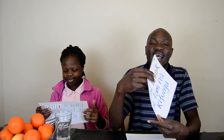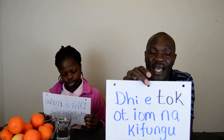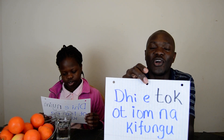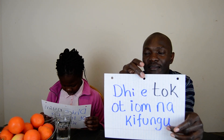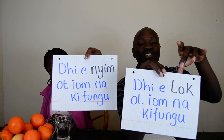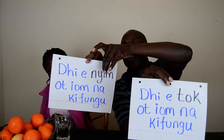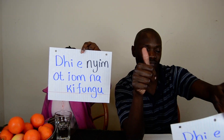Dhi ee tok ot, iomna kifungu. Go to the back of the house and bring me the key. Nikki: Dhi ee nyim ot, iomna kifungu. Go to the front of the house and bring me the key. Tok ot means back of the house, nyim ot means front of the house.